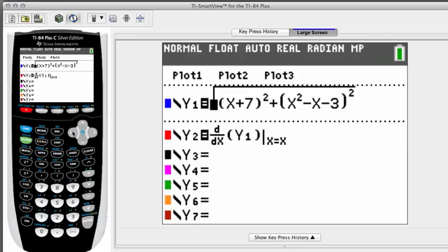I'm going to turn this original equation off. If you move your cursor, your black blinky cursor, so it's on top of the equal sign next to where it says y1, if you hit enter, that will turn that off. This way we're just going to be looking at the graph of the derivative.